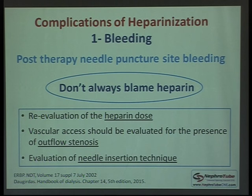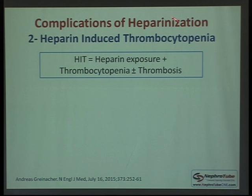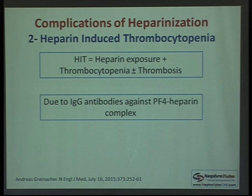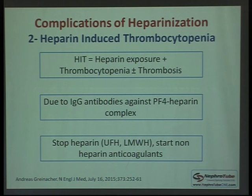The second complication of heparinization is heparin-induced thrombocytopenia (HIT). It is secondary to heparin exposure and presents with thrombocytopenia plus thrombosis. The main cause is development of IgG antibodies against the platelet factor 4-heparin complex. The cornerstone treatment is stopping all heparin — both unfractionated and low molecular weight — and starting non-heparin anticoagulants.